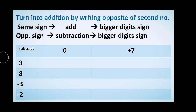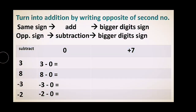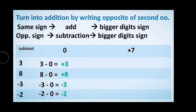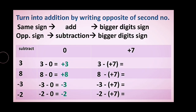We have zero and positive seven. Boys and girls, whenever you have zero in subtraction or addition, remember: zero added or subtracted by any number gives that same number as the answer. No need to follow any step - 3 minus 0 is positive 3, 8 minus 0 is positive 8, negative 3 minus 0 is negative 3, and negative 2 minus 0 is negative 2. Zero was invented by Indians - proud of it!